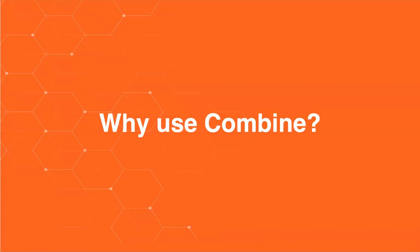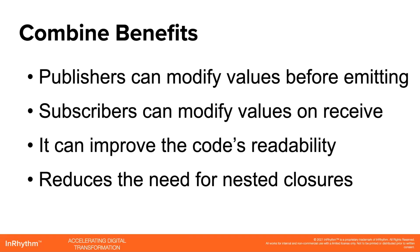With SwiftUI, you could already be using Combine and not realize it. If you've ever used an observable object with a published property wrapper, you've been using Combine. If the out-of-the-box functionality of publishers or subscribers don't meet your needs, you can actually create custom publishers and custom subscribers — we're not going to talk about that today, but it is something to keep in mind. A big part of Combine is you're able to interact with the data and process the data before it shows up, so your publisher can modify values before emitting them out to the subscribers. Additionally, the subscribers can modify the values when they receive them, but before they're displayed or used by other parts of your code.